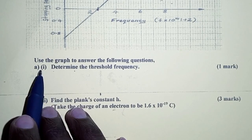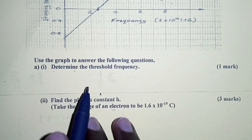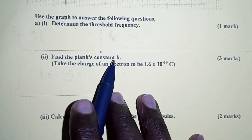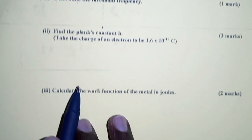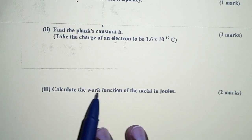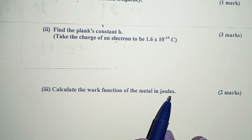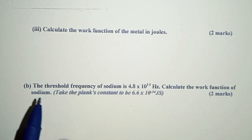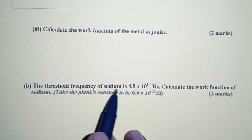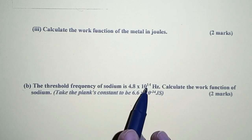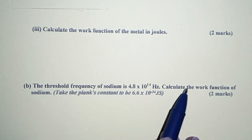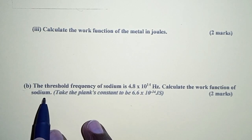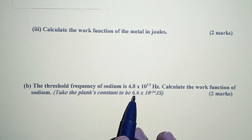Part A: Roman 1, determine the threshold frequency. Roman 2, find Planck's constant H. Roman 3, calculate the work function of the metal in joules. And then Part B: the threshold frequency of sodium is 4.8 times 10 to the power 14 Hz. Calculate the work function of sodium. Take Planck's constant to be the given value.